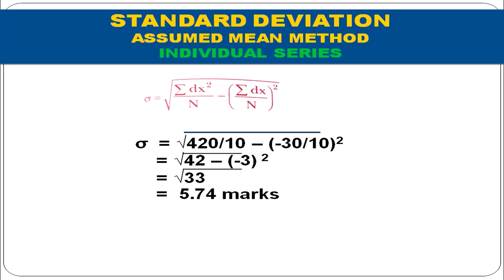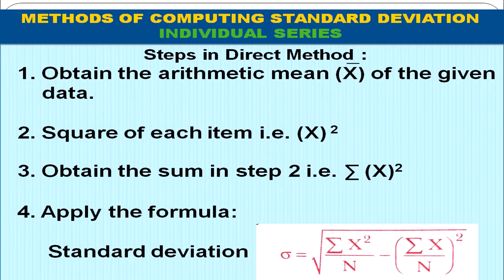Now we will calculate standard deviation by the direct method. The steps are: first, calculate the mean. Second, square each item value (capital X²). Third, obtain Σx². Then apply the formula: SD = √(ΣX² / n − (Σx / n)²), which is the square root of the mean of squared items minus the square of the mean.